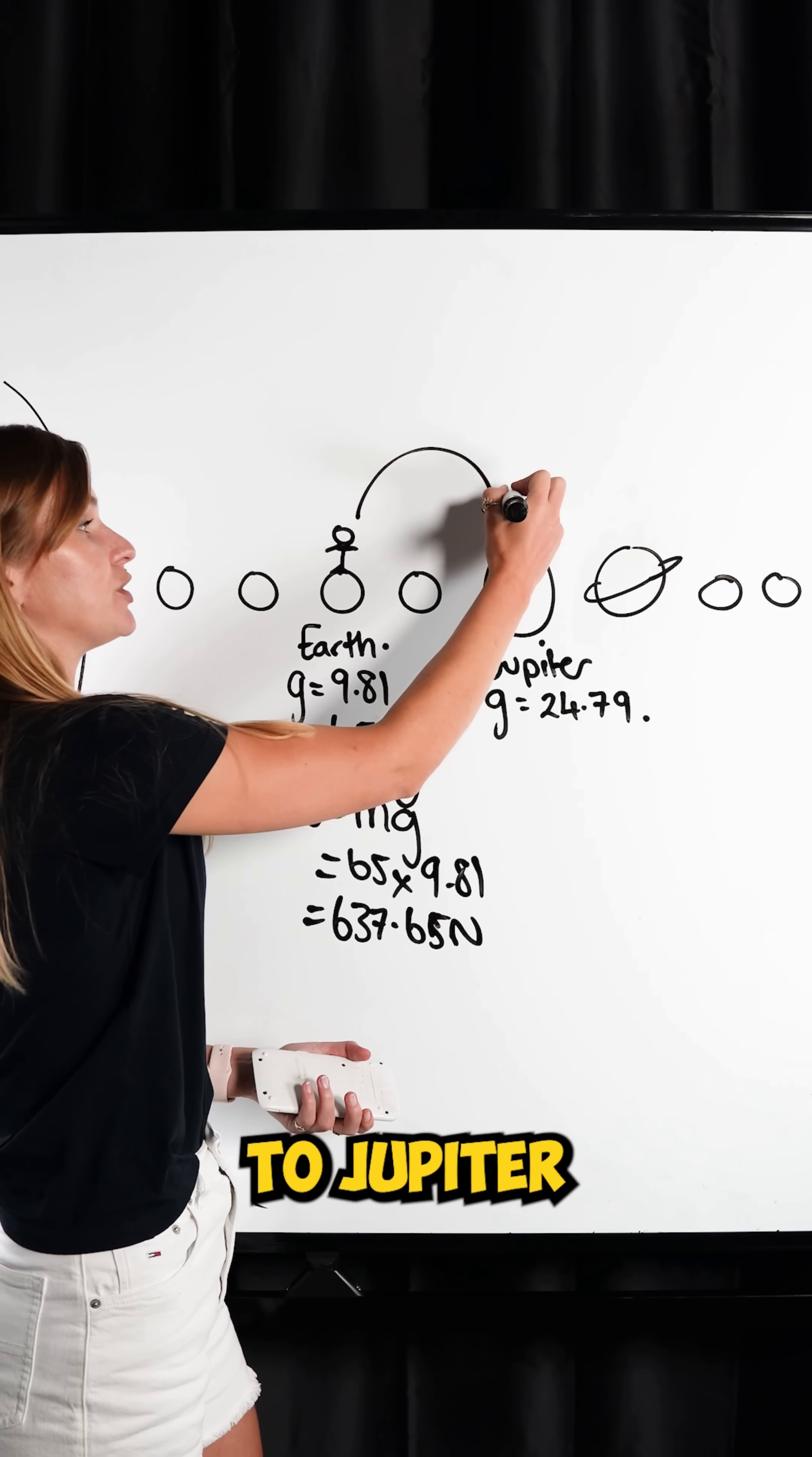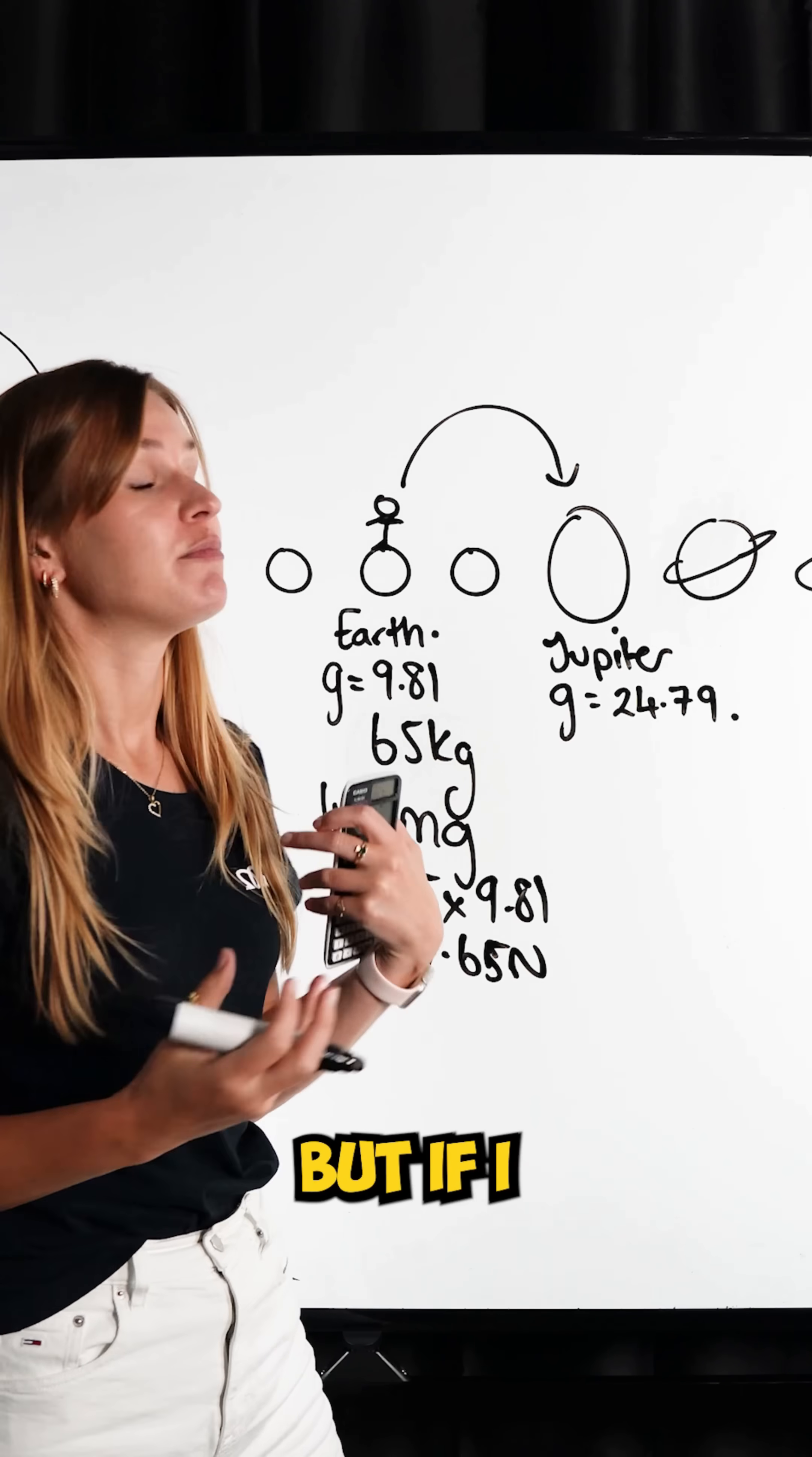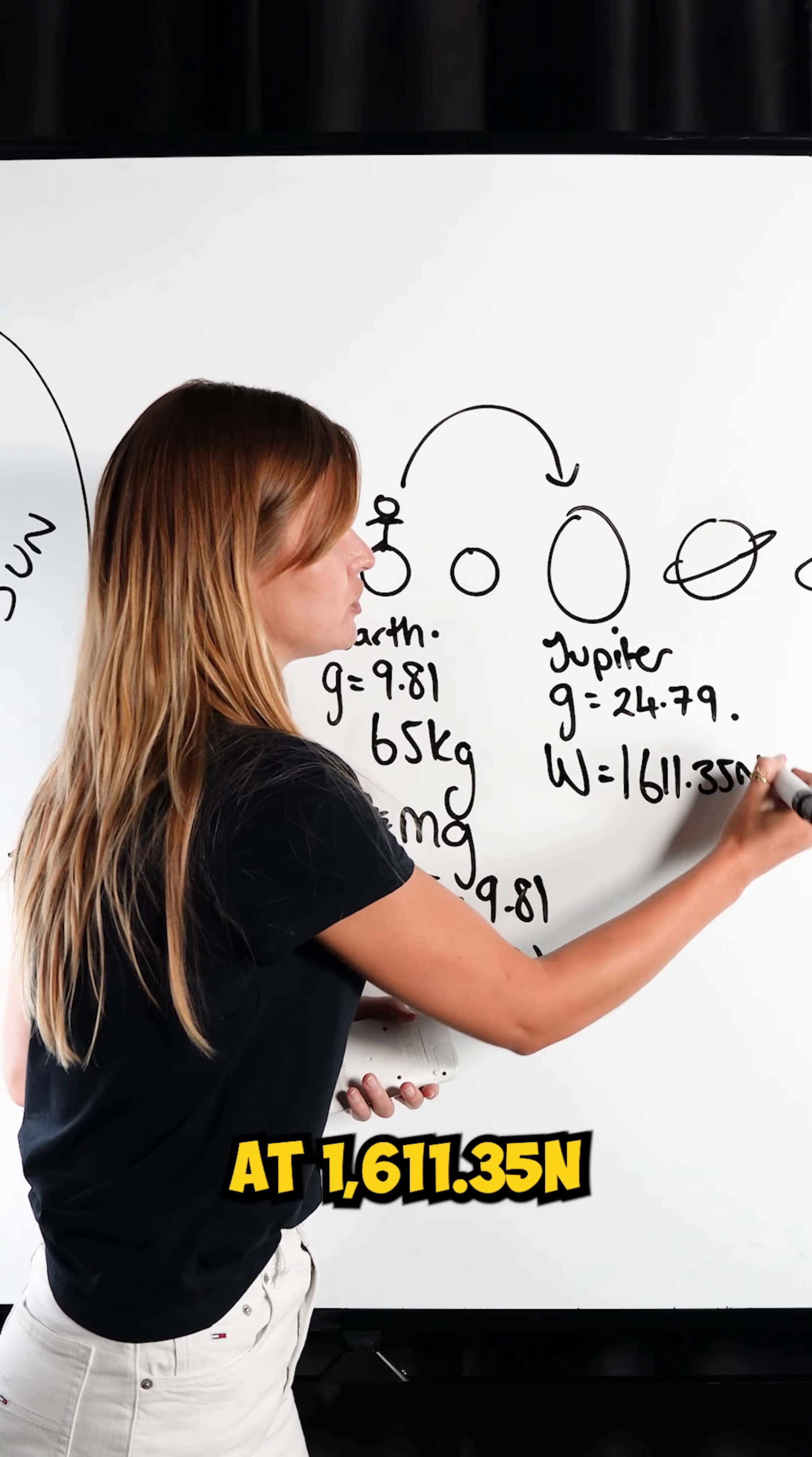If I then went over to Jupiter, where the gravity is much larger because the planet Jupiter is so much bigger, and somehow I could stand - but I couldn't because Jupiter is a gas planet. If I could stand, we calculate my weight then on Jupiter. My weight on Jupiter would come out 1611.35 newtons.